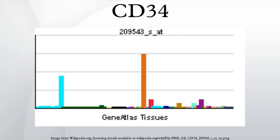Regarding tissue distribution, cells expressing CD34 are normally found in the umbilical cord and bone marrow as hematopoietic cells, a subset of mesenchymal stem cells, endothelial progenitor cells, endothelial cells of blood vessels but not lymphatics, mast cells, and a subpopulation of dendritic cells in the interstitium and around the adnexa of the dermis of skin.